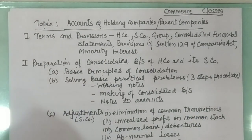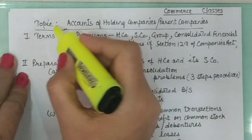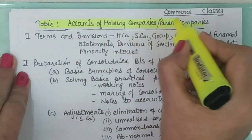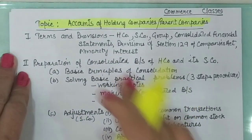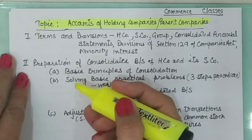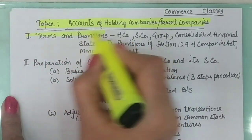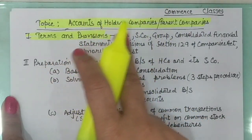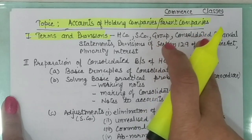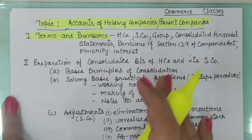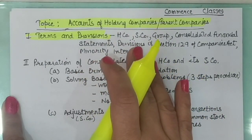Today's topic is accounts of a holding company or parent company. This is a very relevant and significant topic because one question from this complete topic comes in your exams. The study of accounting of a holding company is divided into three parts. First, we shall study terms and provisions — basic terms like holding company, subsidiary company, group company, and the main provisions under which these accounts are prepared.